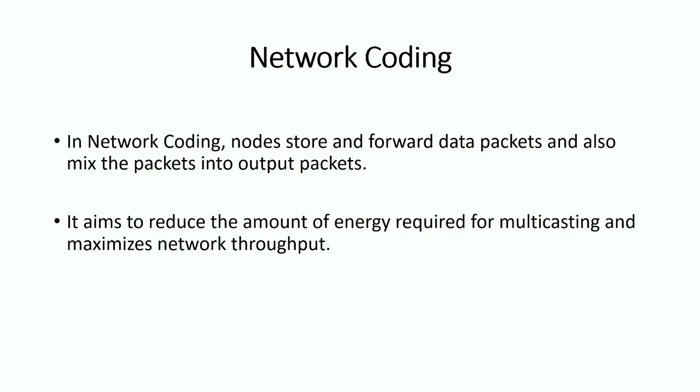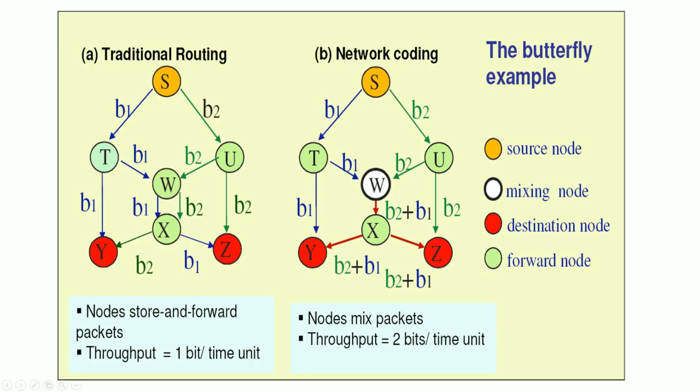For a brief idea on network coding: two functions are performed by nodes in network coding — they either store and forward packets, or mix packets into output packets. Network coding aims at reducing the amount of energy required for multicasting and also maximizes the network throughput.